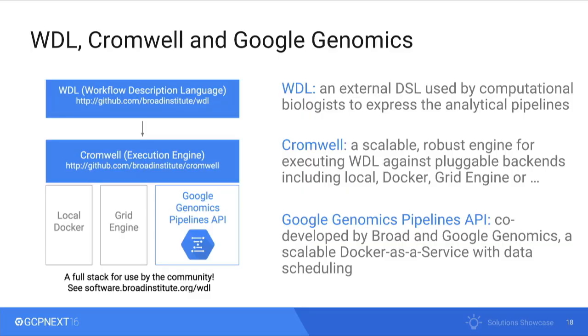To enable this transition to the cloud, we developed an open-source software stack with Google Genomics, starting with a workflow description language called WDL — an external DSL used by computational biologists to express their analytical pipelines. This is handed off to an execution service called Cromwell, both open source. It's a pluggable execution service for WDL with multiple backends for local Docker-based backends, grid engine, and the Google Genomics Pipelines API, which we co-developed with Google Genomics — think of it as scalable Docker-as-a-service with data scheduling.